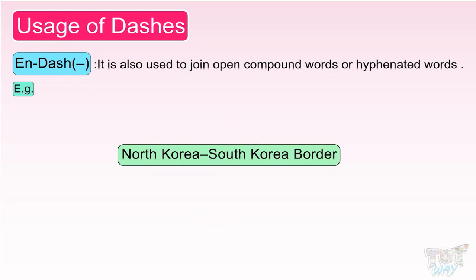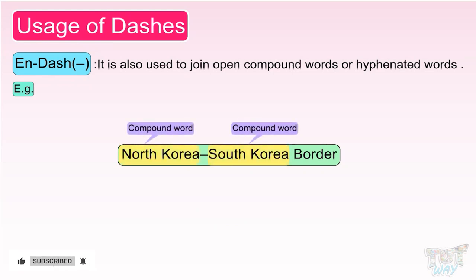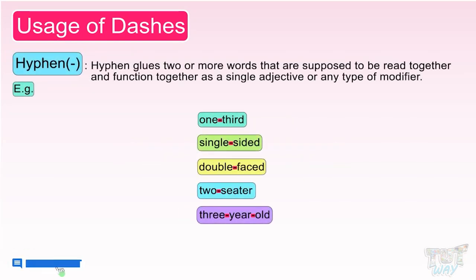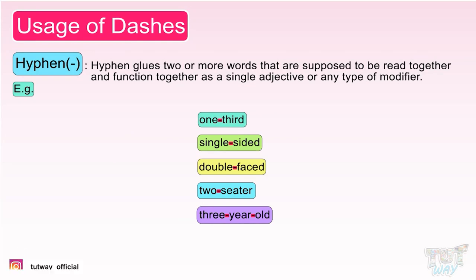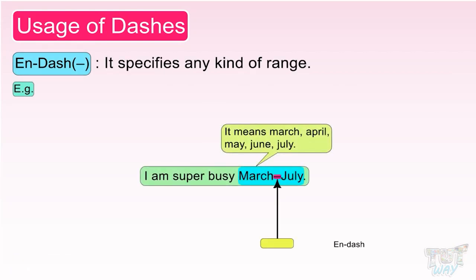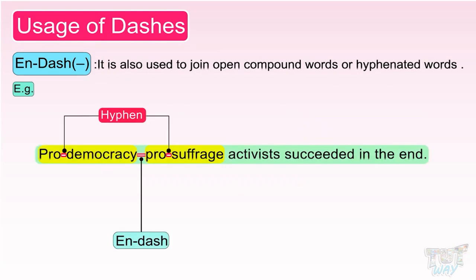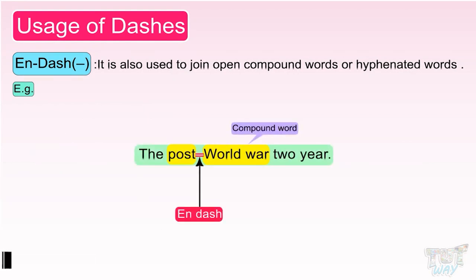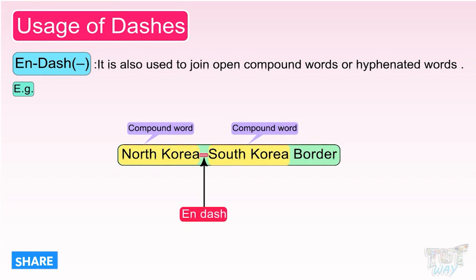'North Korea–South Korea border.' Here again, we have joined two compound words, North Korea and South Korea, with the help of N dash. So we learned that hyphen glues two or more words that are supposed to be together and function together as a single adjective or any modifier, and it is the smallest in size. N dash is used to specify a range, and it is also used to join two hyphenated words, a word with a hyphenated word, a word with a compound word, or two compound words together.